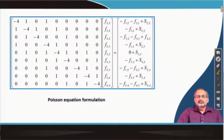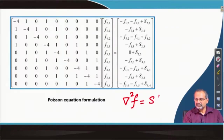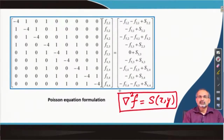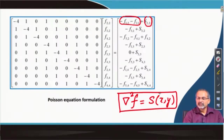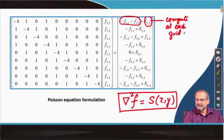If we were to write down the same matrix equation but for Poisson's equation instead of Laplace, we had written the Poisson form with a source term on the right-hand side. In addition to the boundary values, we would additionally have a source term — a function of x and y — computed at each grid point and added to the right-hand side.